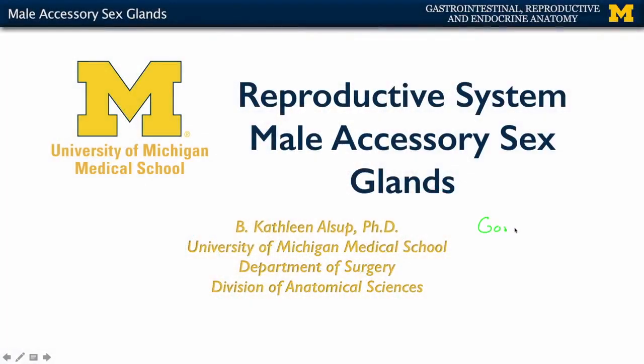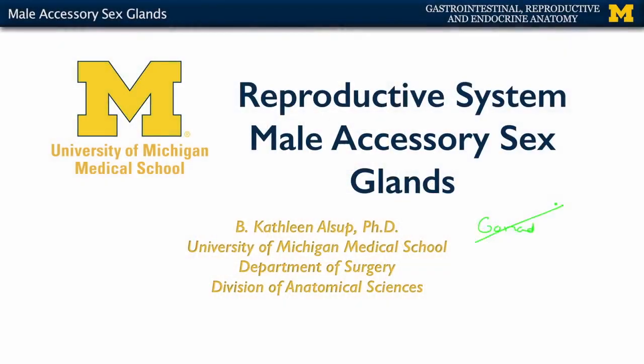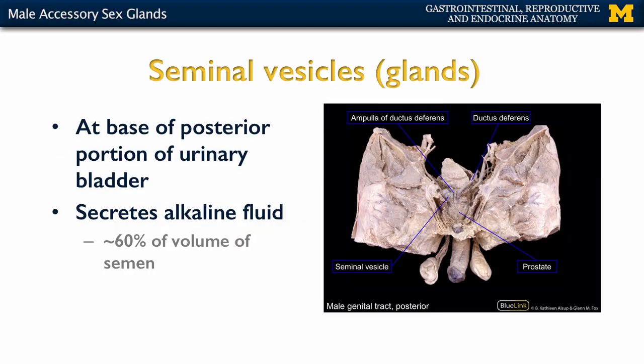Let's discuss the three main male accessory sex glands, but first let's talk about what the term accessory sex glands means. Basically, accessory just indicates that we're not talking about the gonads — we're not talking about the testes. So these aren't going to play a role in the formation of sperm, but they will play a role in the formation of seminal fluid, and we'll talk about specifically what these are composed of.